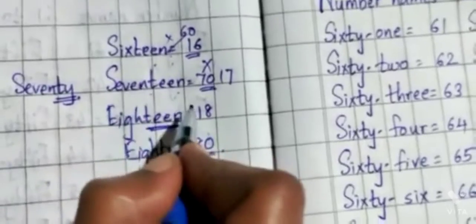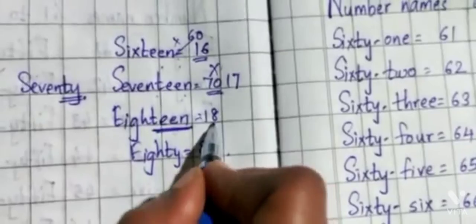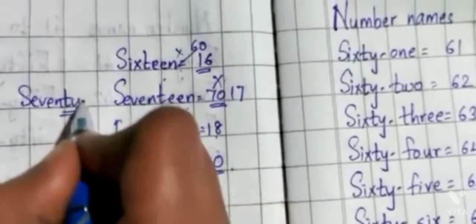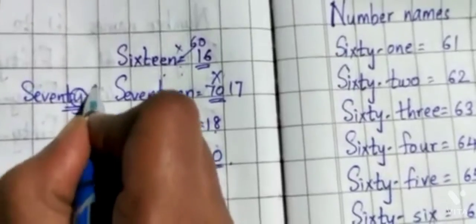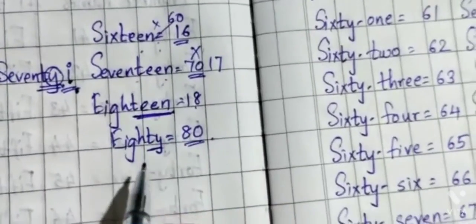So when we teach them in the beginning, we have to tell them if it's teen, then write 18, and if it's ty, then write T-Y. Some people write I for this. So these are the mistakes children make while writing number names.